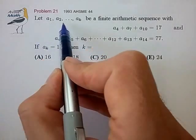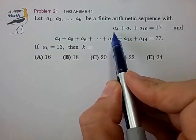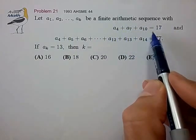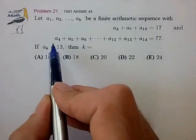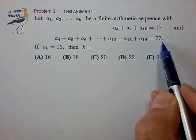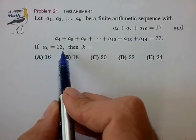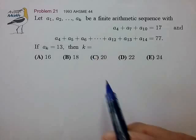Let the terms A1 through AK be a finite arithmetic sequence with the terms A4, A7, A10 summing to 17 and the terms A4 through A14 summing to 77. If the term A sub K is equal to 13, then the index value K is equal to what?